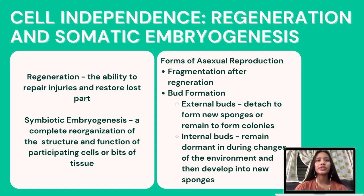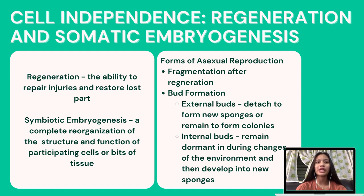External buds, after reaching a certain size, may detach to form new sponges or remain on the parent to form colonies. Internal buds, also known as gemmules, remain dormant when the parent animal dies, thus preserving the species during periods of freezing or severe drought. By escaping through micropyles, they are then able to develop into new sponges.